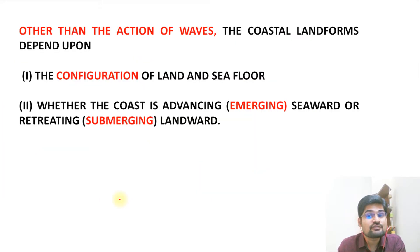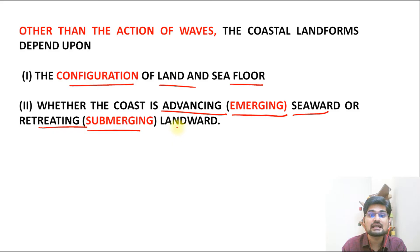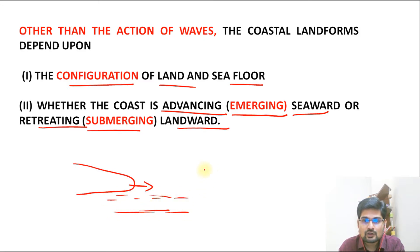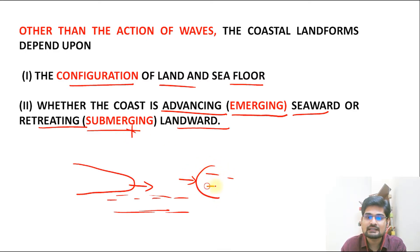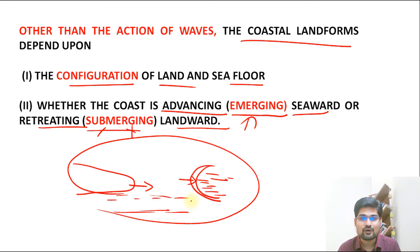It is not just about the nature of the wave — it is also about the configuration of the land and seafloor. If the coast is advancing seaward, it is called an emerging coast. If it is retreating landward, it is submerging. So many coasts are emerging towards the sea, while others are submerging towards the land. Both wave action and the nature of the coastal land together determine the formation of coastal landforms.